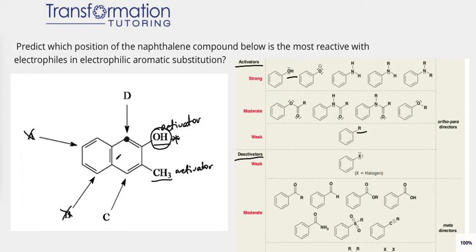Why is it not para? Para is the position opposite of the group. This position is already taken by something. You can't attach anything there because the other benzene ring was attached to it. So only the ortho position is available, and that will be our answer for this question.